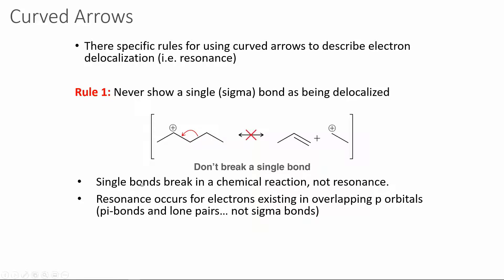Single bonds break in a chemical reaction, not resonance — there will be times in reactions where we move sigma bond electrons, but never for resonance. One important formatting note: the appropriate format for resonance should show all resonance structures in brackets, with a double-headed arrow between them to indicate they are resonance structures for each other. Resonance occurs only for electrons in overlapping p orbitals — pi bonds and lone pairs, not sigma bonds.